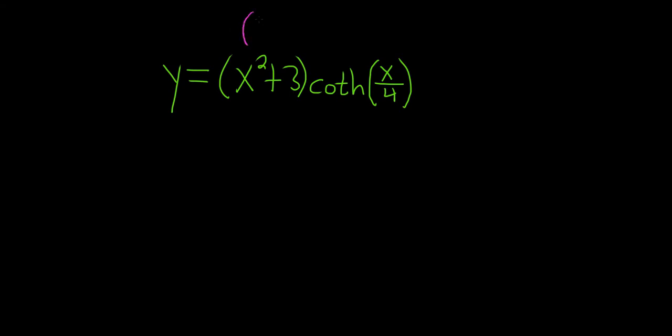Recall the product rule says if we have f times g and we want to take the derivative, think of f as your first function and g as your second function. Then the product rule says it's the derivative of the first times the second plus the first times the derivative of the second.